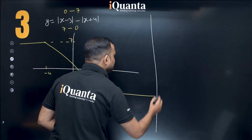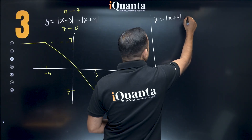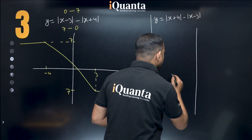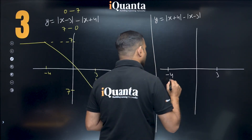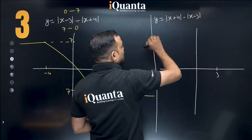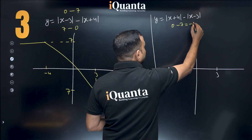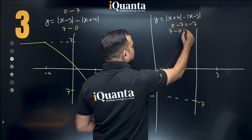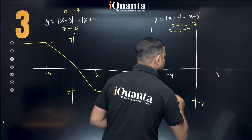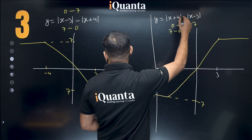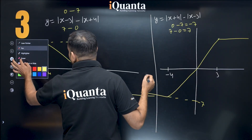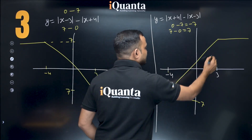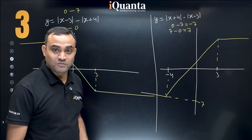Then if you have y = |x + 4| − |x − 3|, where the bigger critical point is after a negative sign, we need to make a small change. At x = −4, the first term becomes 0 and the second becomes 7, so we get −7. At x = 3, the first term is 7 and the second is 0, giving +7. So the graph is flipped. At x = 0, the value will be 1, so the graph sits a little above zero between the critical points. Using these techniques, you can solve complex modulus problems very easily.